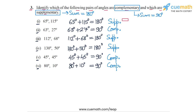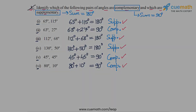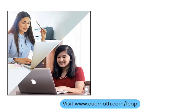So the answer for question 3 is that the pairs in parts 1, 3, and 4 are supplementary, and the pairs in parts 2, 5, and 6 are complementary. This completes question number 3.